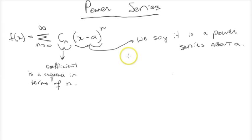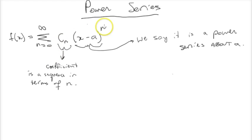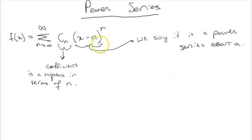Power series are a series that is actually a function of x. A power series broadly takes this form: we've got some coefficient that is a sequence in terms of n, and by that you multiply some x minus an a, which will be a constant, to the power of n. And this a can be whatever you want — it can be 0, it can be 1, it can be 5 halves.